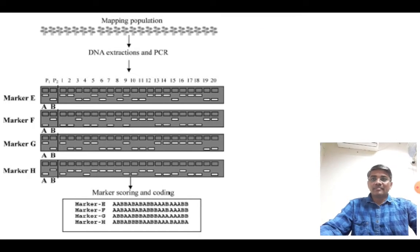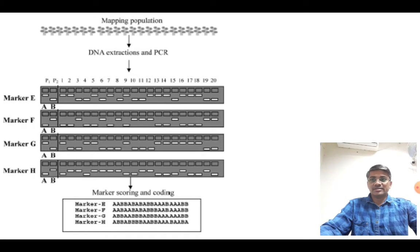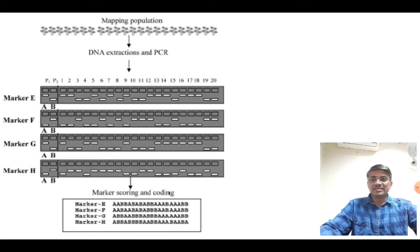Once we develop a mapping population, we have to extract genomic DNA from each of the lines for generation of genotype data using DNA-based markers. You can see the segregation of markers in the population in this figure. This genotype data for each marker is recorded and recombination frequencies are calculated to estimate genetic map distances.